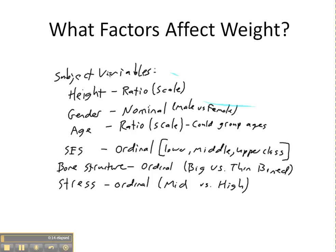To get started, I was asking my students in class what variables could perhaps influence a student's weight. Several possibilities were offered, and for each we identified the scale of measurement — whether it was nominal, meaning categories that you do not rank; ordinal, meaning categories that you would rank; or scale, meaning interval or ratio, where the numbers are actual quantities you can add, subtract, multiply, and divide.